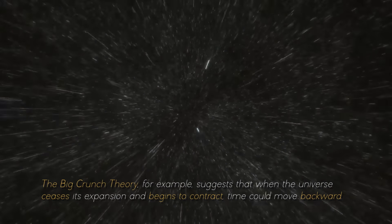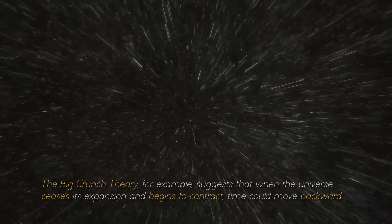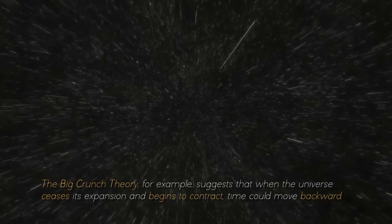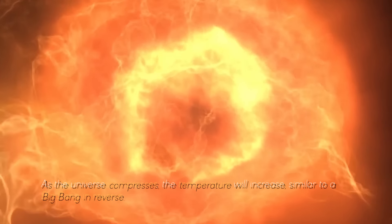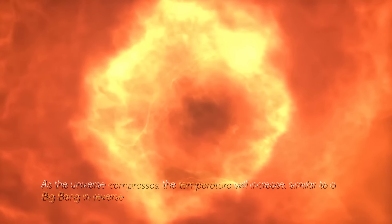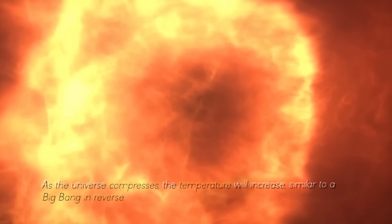The Big Crunch theory, for example, suggests that when the universe ceases its expansion and begins to contract, time could move backward. As the universe compresses, the temperature will increase, similar to a Big Bang in reverse.